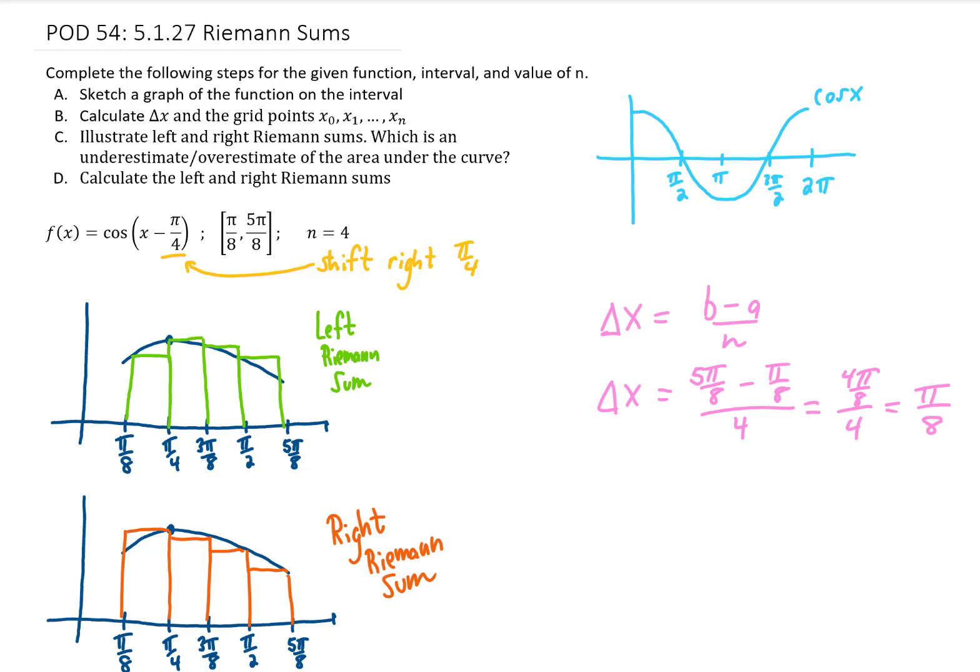For this particular example, it looks like the area of all of these rectangles combined for our left Riemann sum is going to be an overestimate of the actual area under the curve between pi over 8 and 5 pi over 8. And looking down here at this right Riemann sum, it looks like the area of these four rectangles is going to be an underestimate of the actual area under the curve.